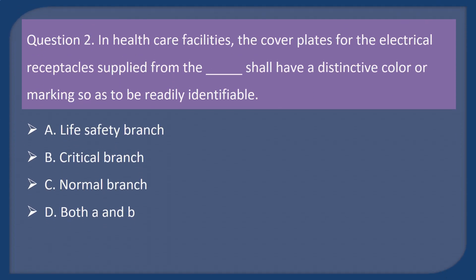Question 2. In healthcare facilities, the cover plates for the electrical receptacles supplied from the ____ shall have a distinctive color or marking so as to be readily identifiable. A. Life safety branch. B. Critical branch. C. Normal branch. D. Both A and B.